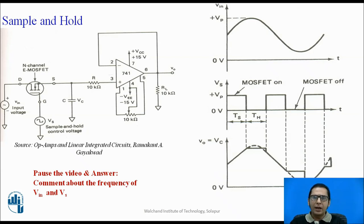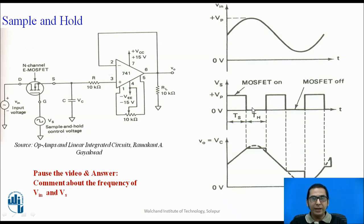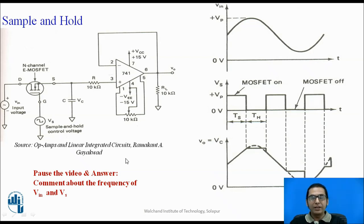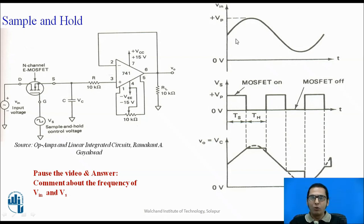You can pause the video and answer this question: what is the relationship between the frequency of Vin and Vs? There are two waveforms — Vin, the input waveform, and Vs, the control voltage. What is the desirable relationship between them? The answer is that the frequency of the control waveform must be much greater than that of the input waveform.